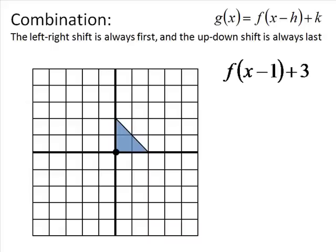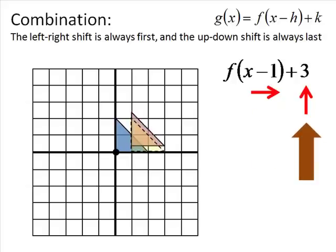So if we have f(x - 1) + 3, the minus 1 we're going to do first because it's inside the parentheses, and minus 1 means we go to the right one unit. The plus 3 on the end means we go up. So we're going to take our triangle, first shift it to the right 1, and then go up 3. Your final transformation is always going to be the pink shape — because I like pink.